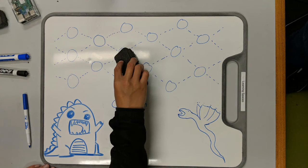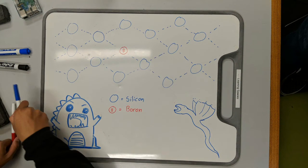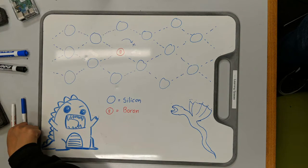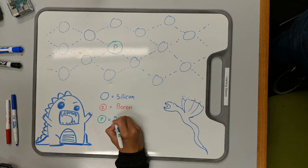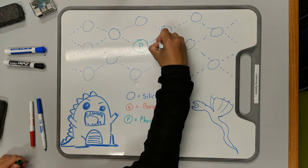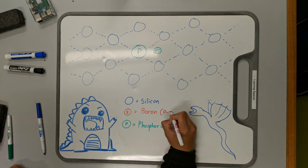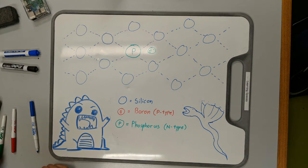Doping is the process of replacing a silicon atom with another. In this example, boron is used and it will create an electron hole as boron has less electrons. Next, phosphorus is used. This element has extra electrons and will add additional electrons to the system. Boron is known as p-type doping as it creates a positive environment, and phosphorus is known as n-type doping as it creates a negative system.